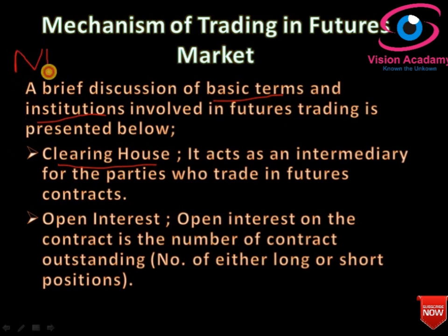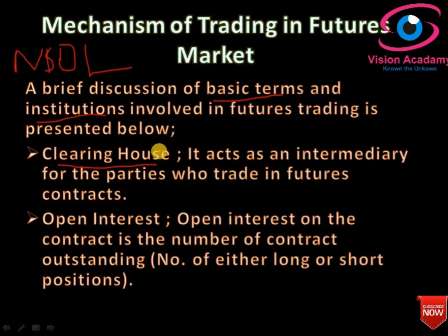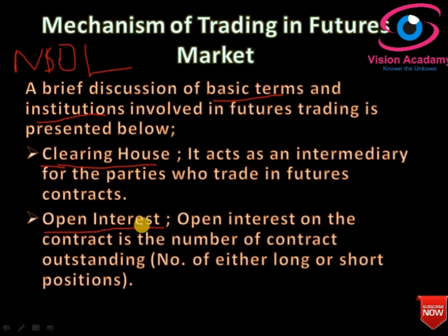Examples of clearing corporations include NSDL and CSDL. The clearinghouse becomes the seller of the contract for a long position, and becomes the buyer of the contract for a short position — it gives the opposite action to your position. This is why futures contracts are easy to cancel or terminate.